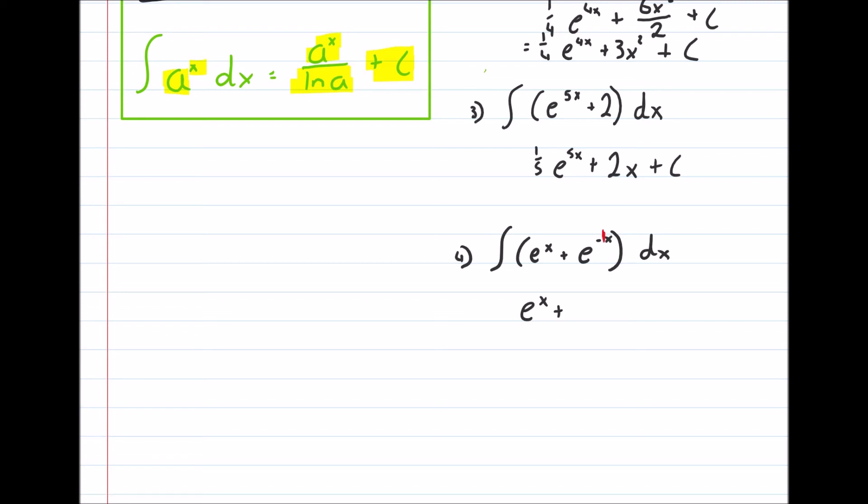So that's plus 1 over minus 1 e to the power of minus 1x, plus c. I can redo that and simplify it. That's it done, by the way, but I can simplify it a bit.